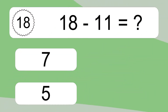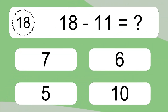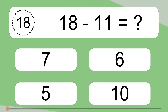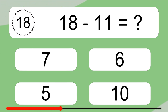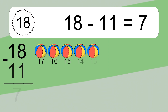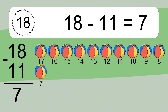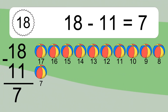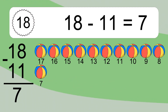18 minus 11 equals what? 18 minus 11 equals 7. Let's count it. 17, 16, 15, 14, 13, 12, 11, 10, 9, 8, 7.